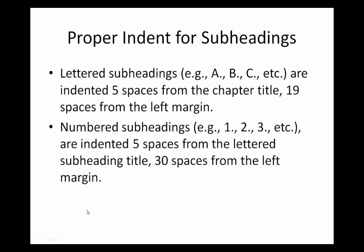To achieve proper indentation for subheadings, use the space bar. Lettered subheadings — A, B, C, D — are indented five spaces from the chapter title, or the easier method is to space 19 spaces from the left margin. Numbered subheadings — 1, 2, 3 — are indented five spaces from the lettered subheading title, or 30 spaces from the left margin.